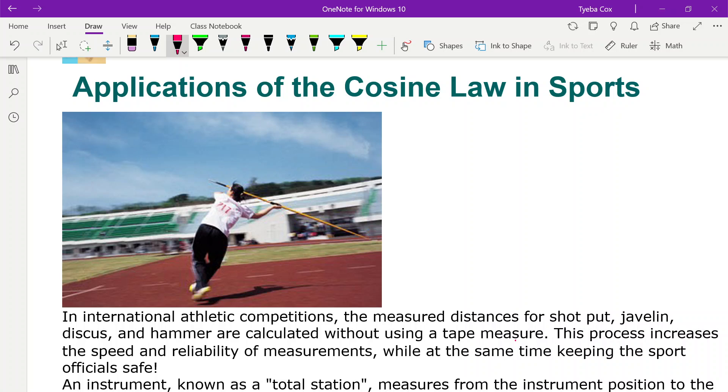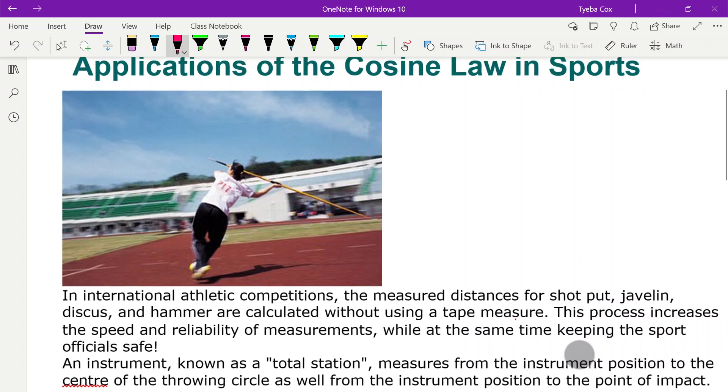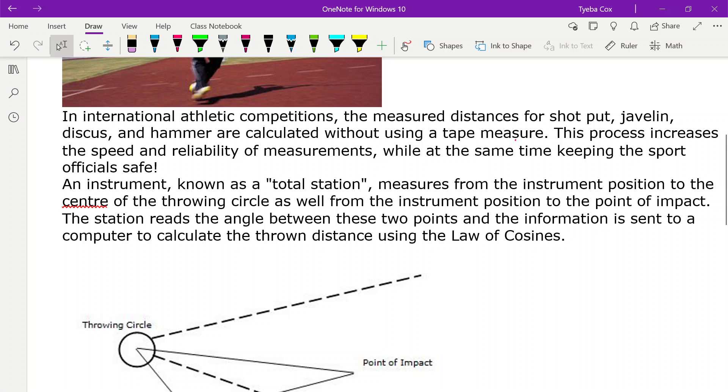Here's an example of the application of cosine law in sports. In international athletic competitions, the measured distances for shot put, javelin, discus, and hammer are calculated without using a tape measure.